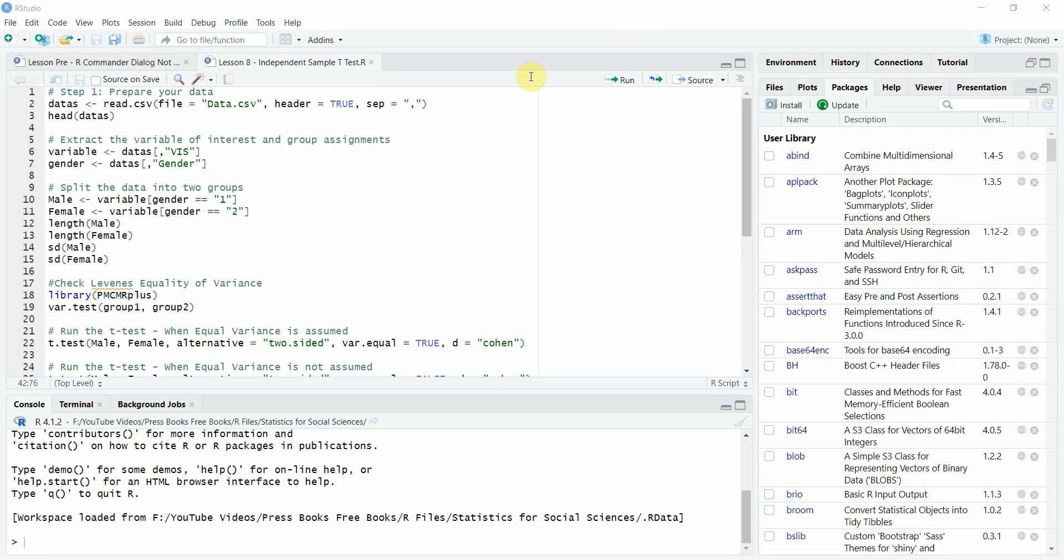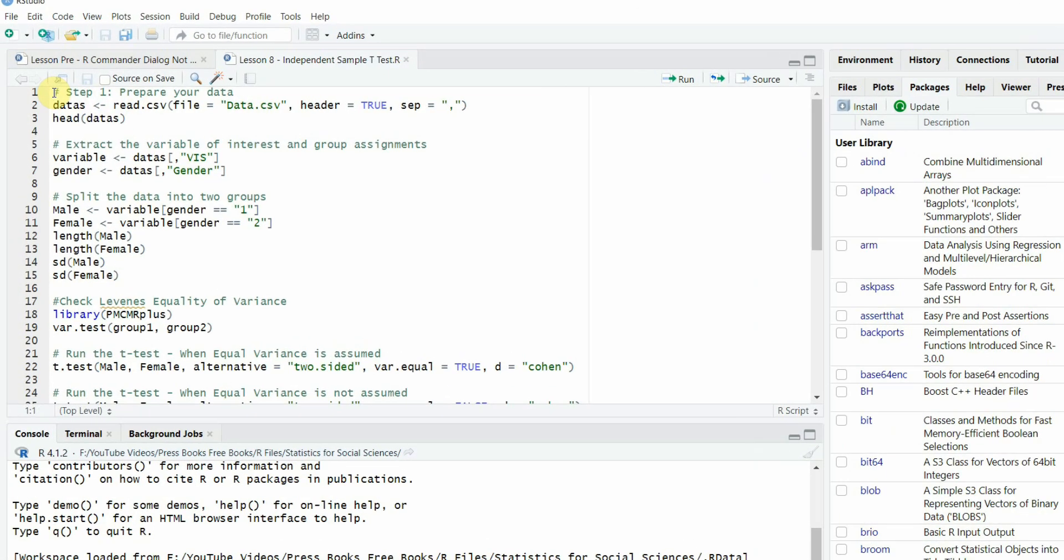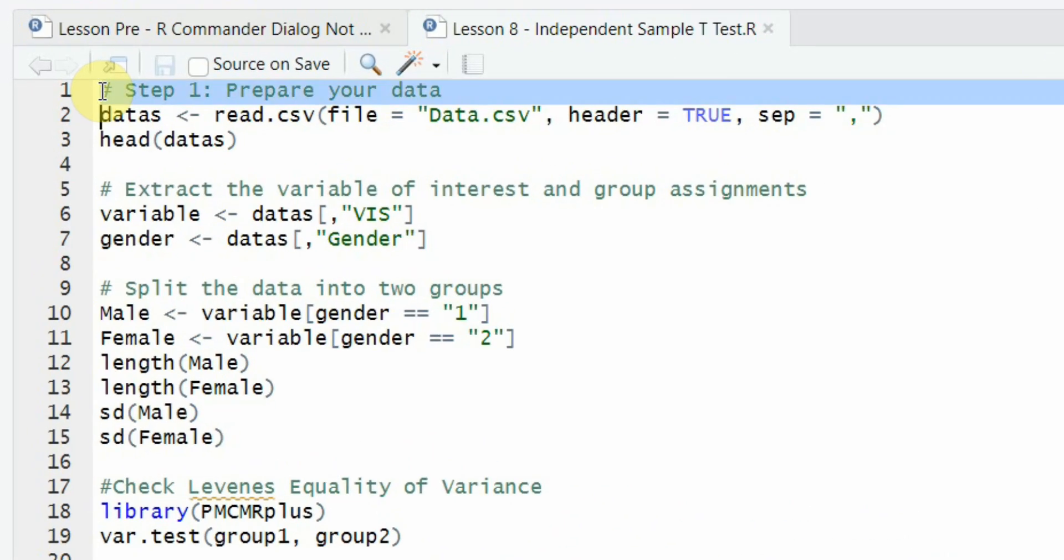Now how do we run independent samples t-test in R? The first step is to prepare your data. The second step is read the data file using the CSV function where you mention your file. Now it's in the same folder as my R script, header is true, separator is comma. Now it is a comma separated version.